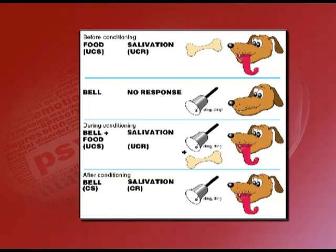Let us see the four steps in which this process continued. Step 1: the harnessed dog in a box was presented with food on a plate. Upon the sight of food, the dog salivated, which is the natural reaction. Therefore, we call the food an unconditioned stimulus — the natural stimulus — and the saliva an unconditioned response, that is, the natural response.